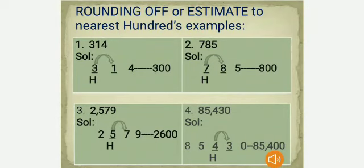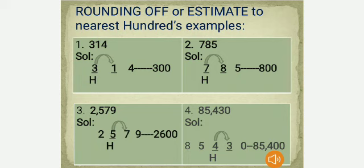Now, rounding off to the nearest hundreds place. First example: 314. The immediate right digit after the hundreds place is 1, which is less than 5, so we round down to 300. Second example: 785. The next right digit is 8, which is more than 5, so we round up to 800.